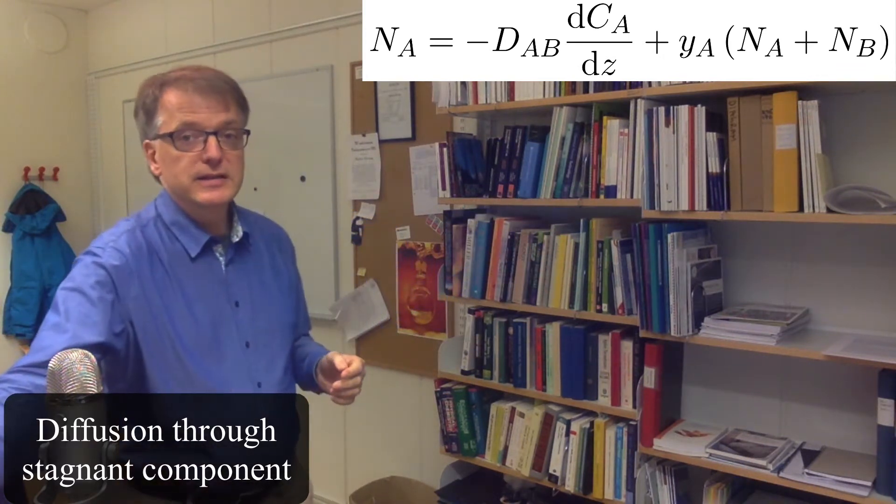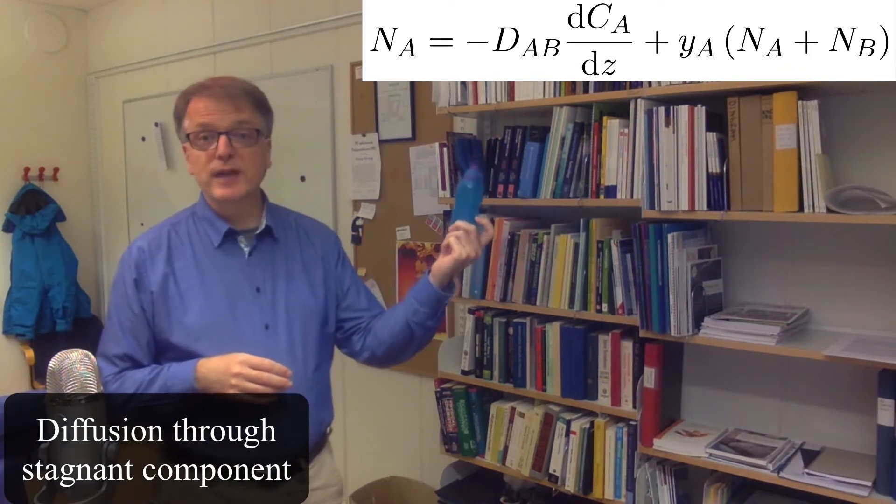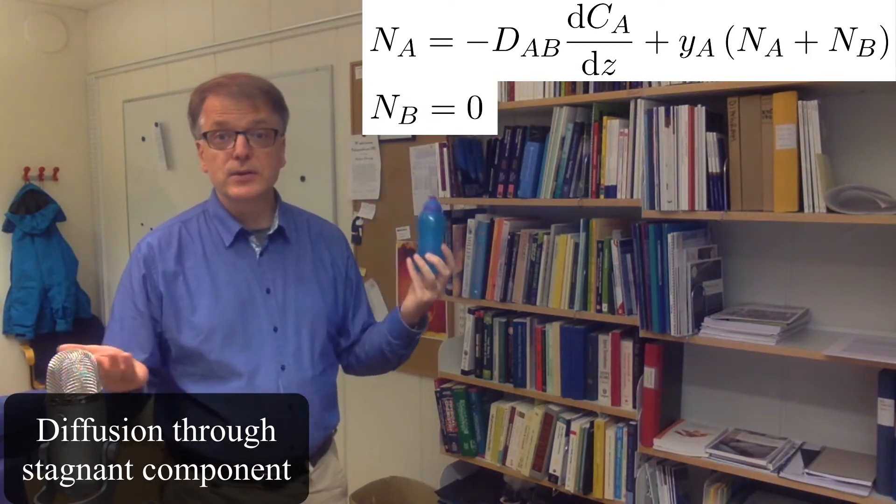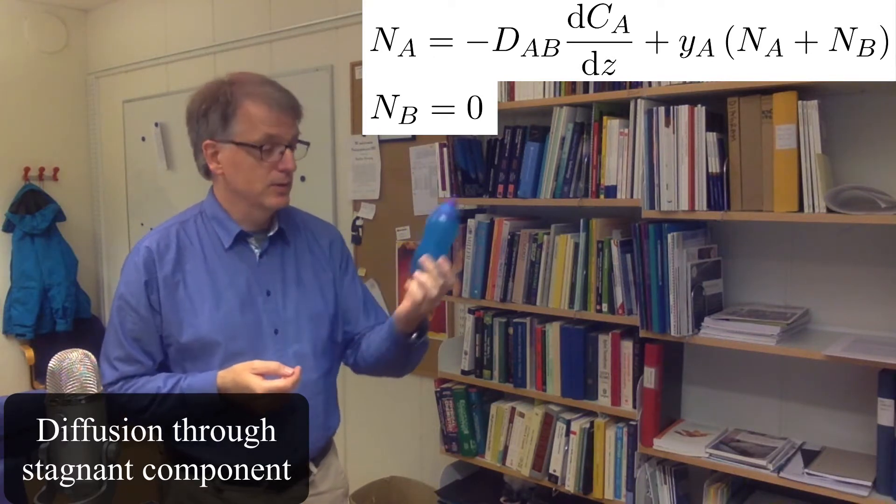What we get in this case is that the movement of air Nb is zero. There is no movement of air into this bottle, approximately none at least.